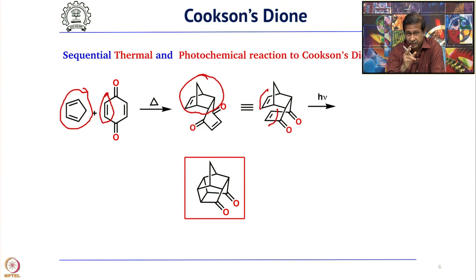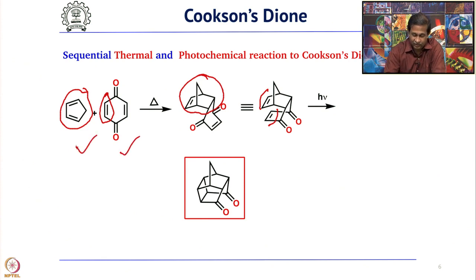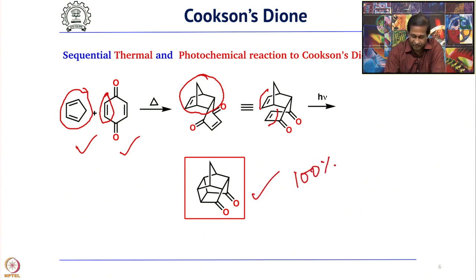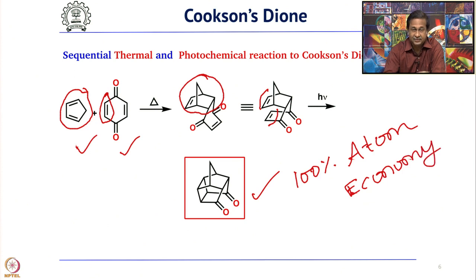Starting from cyclopentadiene and benzoquinone, you get a 100% atom economy reaction — whatever you started with in the starting material, you can see all of that in the product. 100% atom economy — you do not lose anything. This is the beauty of all cycloaddition reactions: they give 100% atom economy.